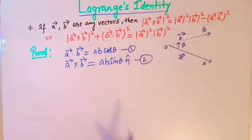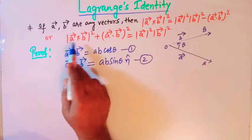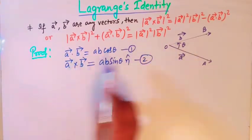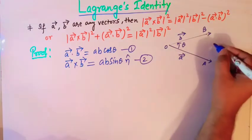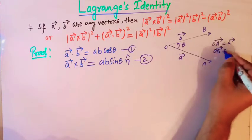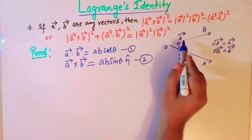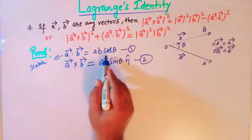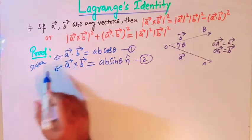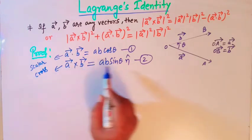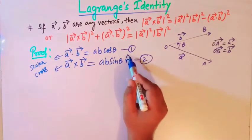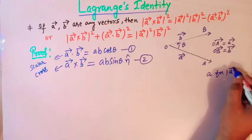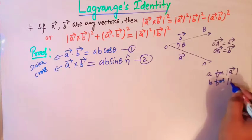Now if we take this term to the other side, we can write this statement in rearranged form. So let us prove this identity. Here we have vector A and vector B — OA is vector A and OB is vector B — and let theta be the angle between vector A and vector B. The dot product of A and B is defined using cos theta, and the cross product of vector A and vector B is defined as AB sin theta times n-hat. Here A and B represent the magnitudes of vectors A and B respectively.